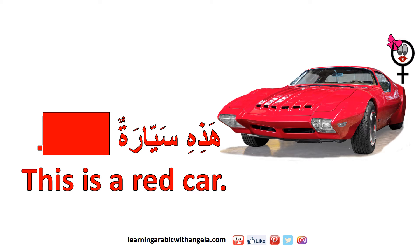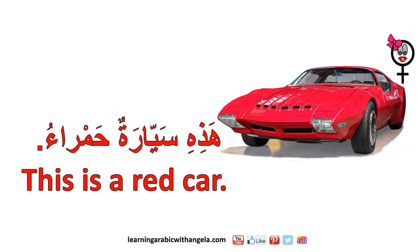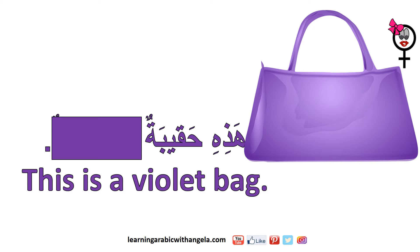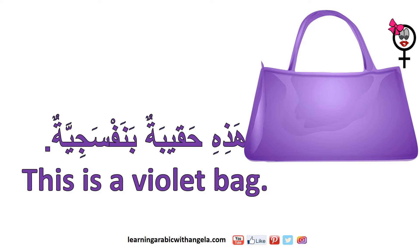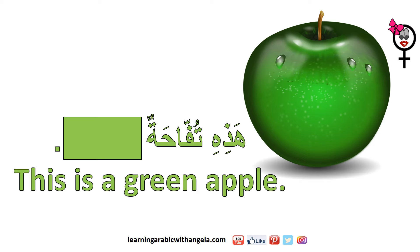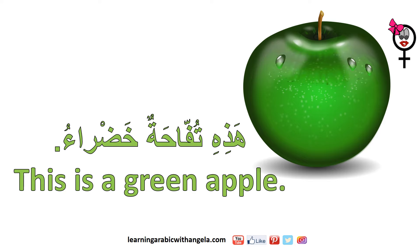هذه سيارة حمراء — This is a red car. هذه كلب — this dog. هذه حقيبة بنفسجية — This is a purple bag. هذه تفاحة خضراء — This is a green apple.